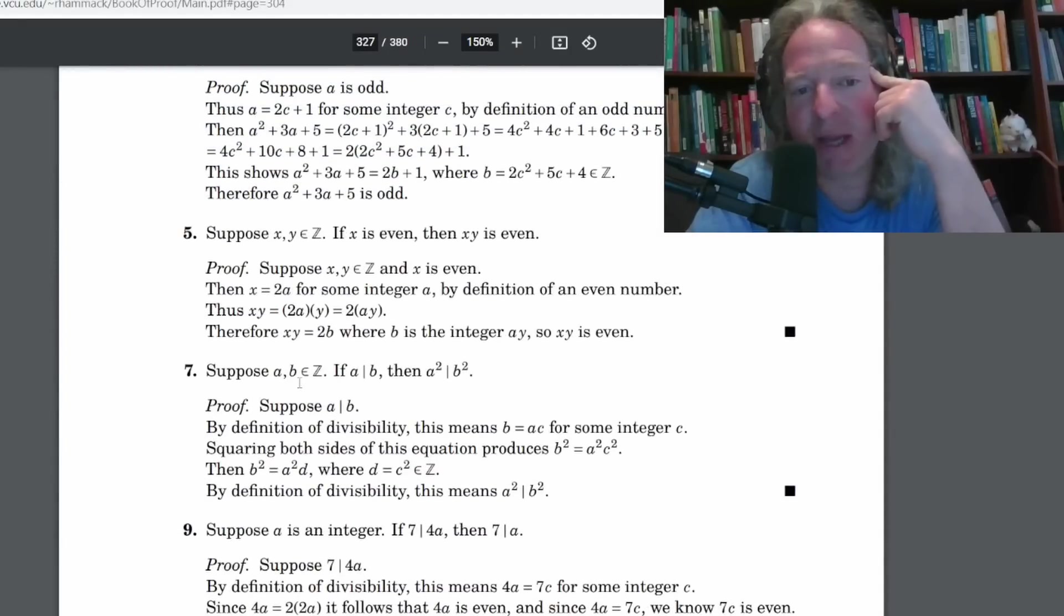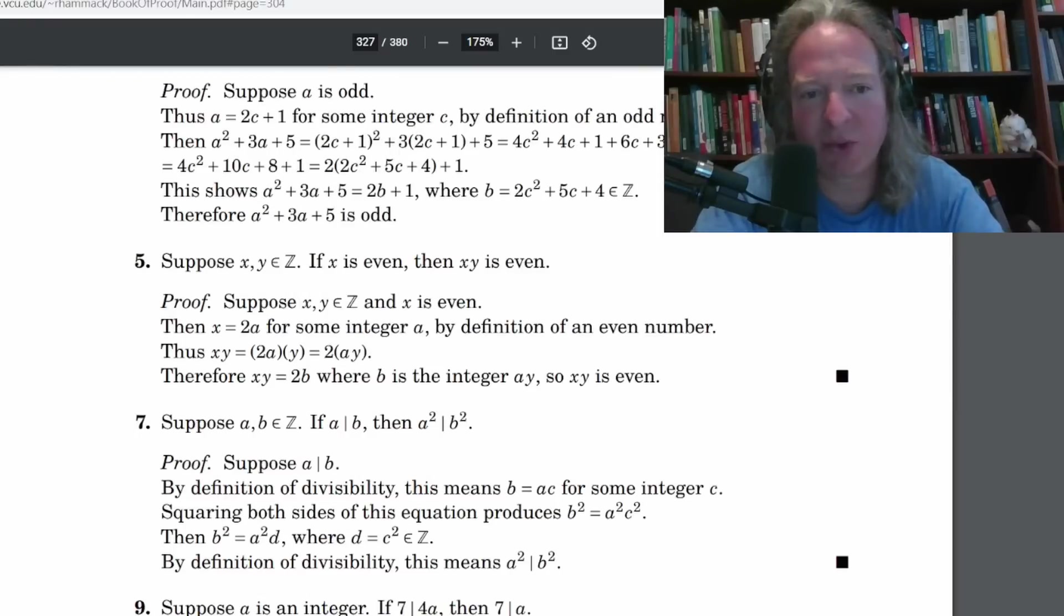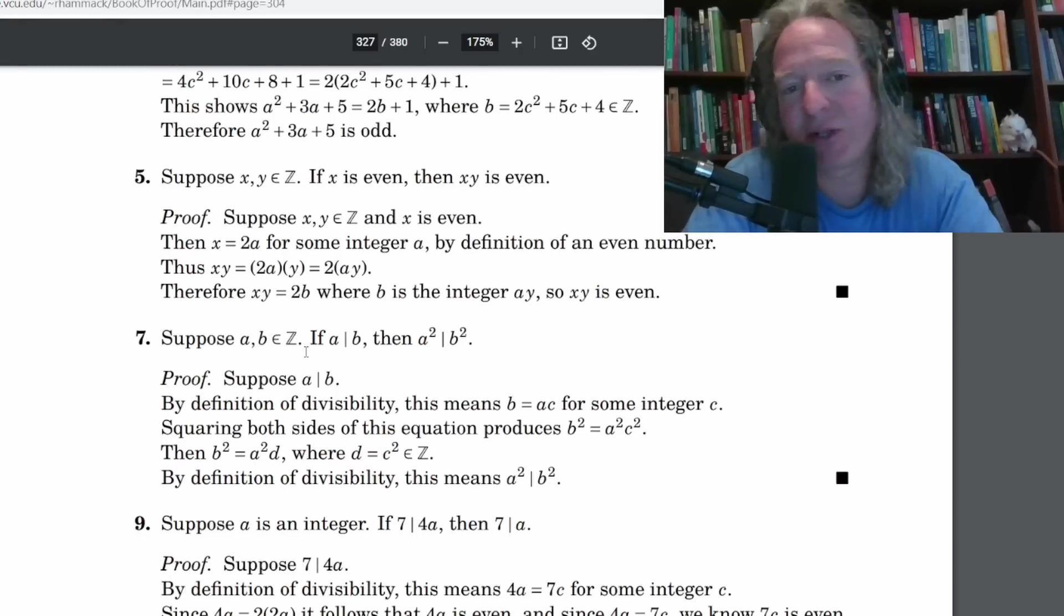There was a proof here somewhere I was looking at earlier. It was a set theory proof and I probably would have written it a little bit differently but that's not to say that his proof is bad or wrong. It's just when you write your own proofs, it always feels better. Here's an example of some proofs he's written. Number seven here: suppose a and b are integers. If a divides b then a squared divides b squared. By definition of divisibility this means that b is equal to a times c for some integer c. Squaring both sides of this equation produces b squared equals a squared times c squared.